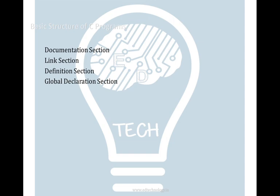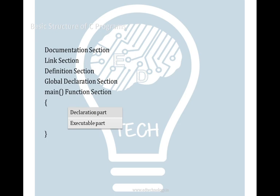Then there is the global declaration section, where you can declare global variables. Then comes the main function, which is the heart of the C program. The main function is denoted by the keyword 'main' with opening and closing brackets. There are braces which define the boundary of the main function, and inside that you have the executable code. This is the basic structure of the C program.